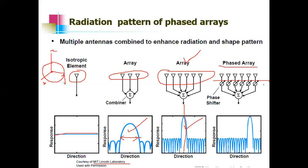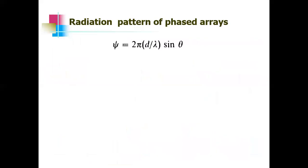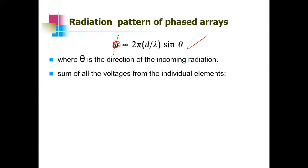In a phased array, different phase shifts are applied to each antenna element. When this is done, you get the same directive radiation pattern but it becomes steerable — you can change its direction. In the textbook notation, φ = 2πd/λ · sin θ is the phase difference between adjacent elements, where θ is the direction of incoming radiation.